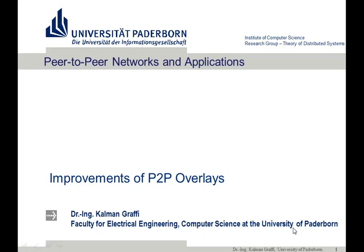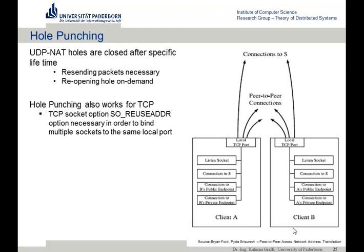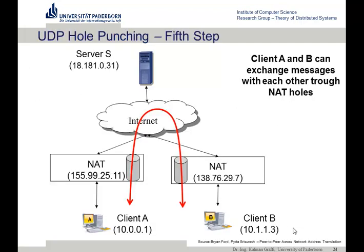Today we will catch up again on the issues of improving peer-to-peer overlays. Last time we ended up with NAT traversal and how hole punching works, so that we can create a connection between two nodes, although both are behind a firewall, or at least one of them is.